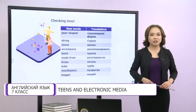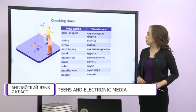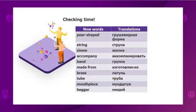It's checking time. Pair-shaped – грушевидная форма. String – струна. Sinew – жилка. Accompany – аккомпанировать. Band – группа. Made from – изготовлен из. Brass – латунь. Tube – труба. Mouthpiece – мундштук. Excellent! Let's move on.